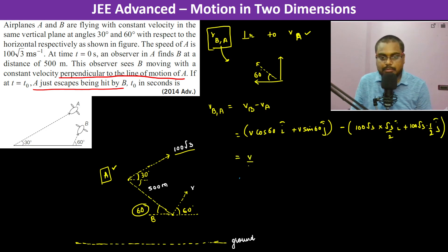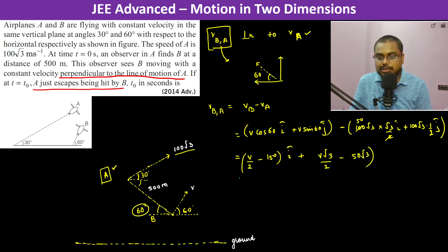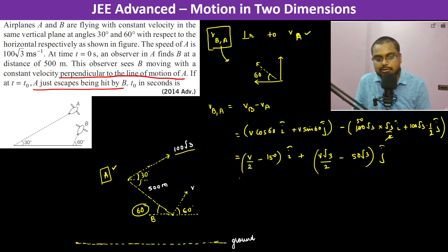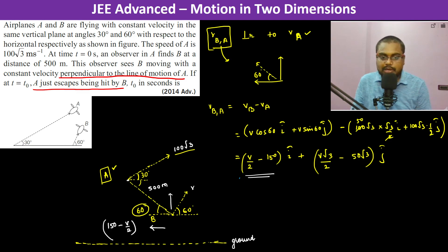So this is going to be: V by 2 minus 150 i-cap plus V root 3 by 2 minus 50 root 3 j-cap. So the velocity of B with respect to A — what A is observing, B is coming in this direction. So in the i-cap direction, it is going to be minus i-cap, it is going to be 150 minus V by 2. And in the j direction, it is going to be V root 3 by 2 minus 50 root 3.